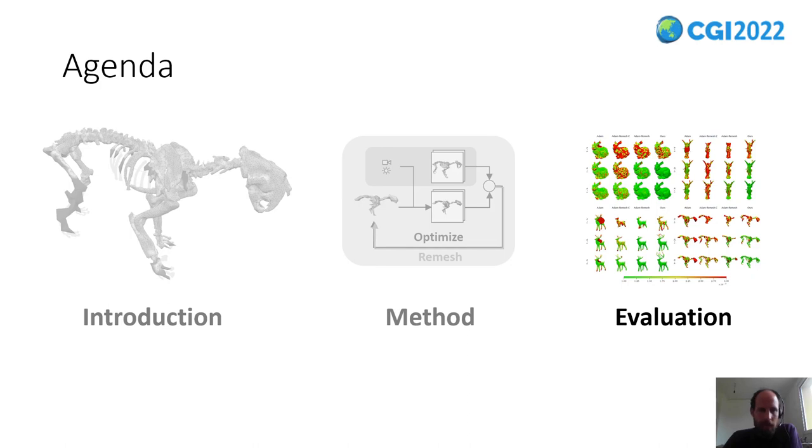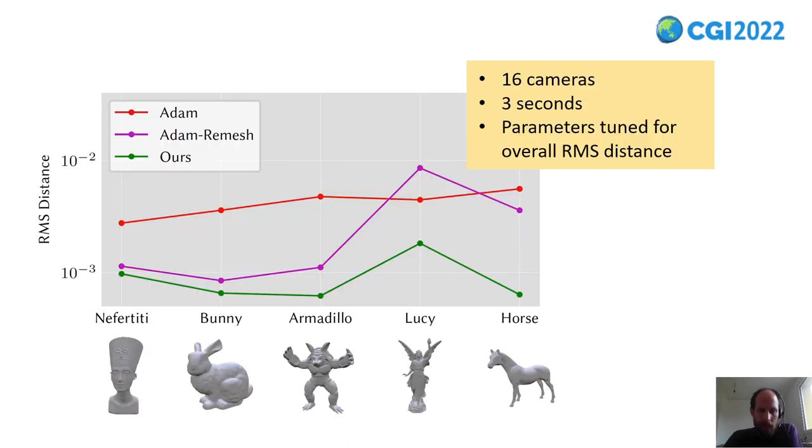So here are some evaluation results. First, I used five basic standard objects. And I compared our method to the two baseline methods that we have seen in the introduction. To make it challenging, I used only three seconds of optimization.